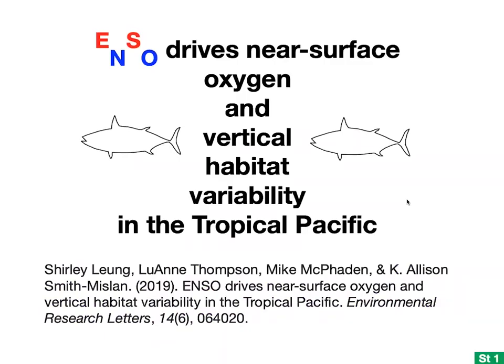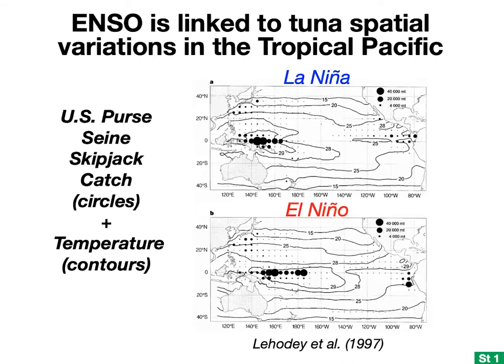For story number one, I studied how ENSO drives near-surface oxygen and vertical habitat variability in the tropical Pacific, published in Environmental Research Letters. ENSO, or El Niño Southern Oscillation, is the main cause of sea surface temperature variability in the tropical Pacific. It's a climate pattern that oscillates between two extreme phases called La Niña and El Niño, with really big repercussions all over the world — including in Seattle, where ENSO phase even dictates how much snow we get each year.